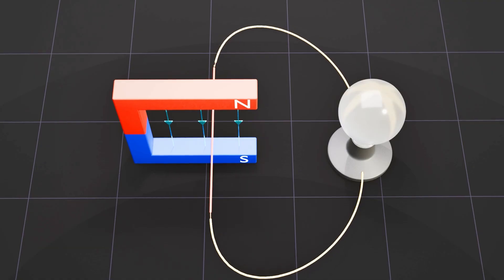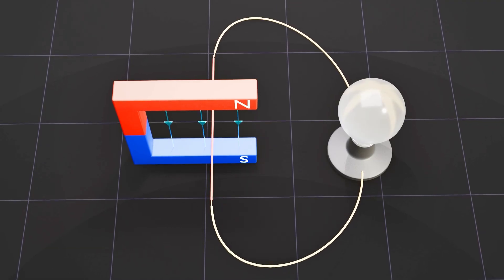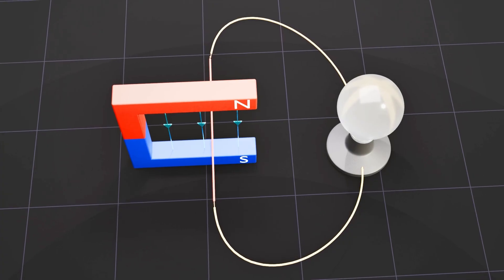Similarly, no current will be induced if the wire is moved horizontally as the magnetic field does not change relative to the wire.